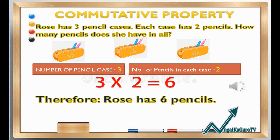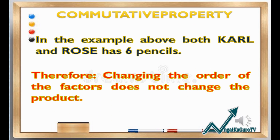In the next problem: Rose has three pencil cases and each case has two pencils. How many pencils does she have in all? The number of pencil cases is three and the number of pencils in each case is two. Three times two equals six. Therefore, Rose has six pencils. In the example above, both Carl and Rose have six pencils. Therefore, the commutative property of multiplication means that changing the order of the factors does not change the product.